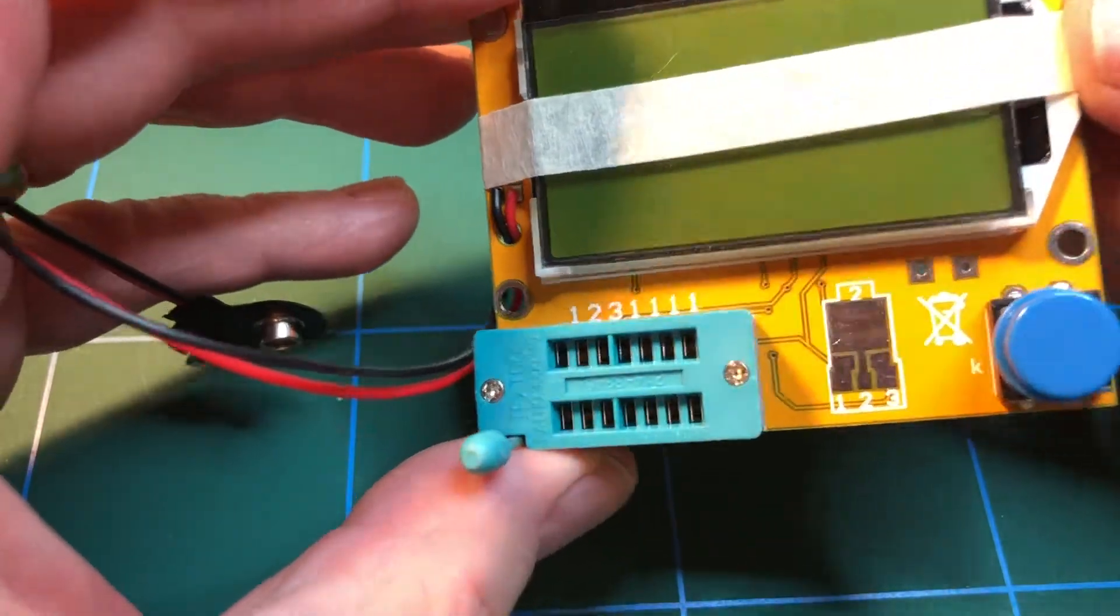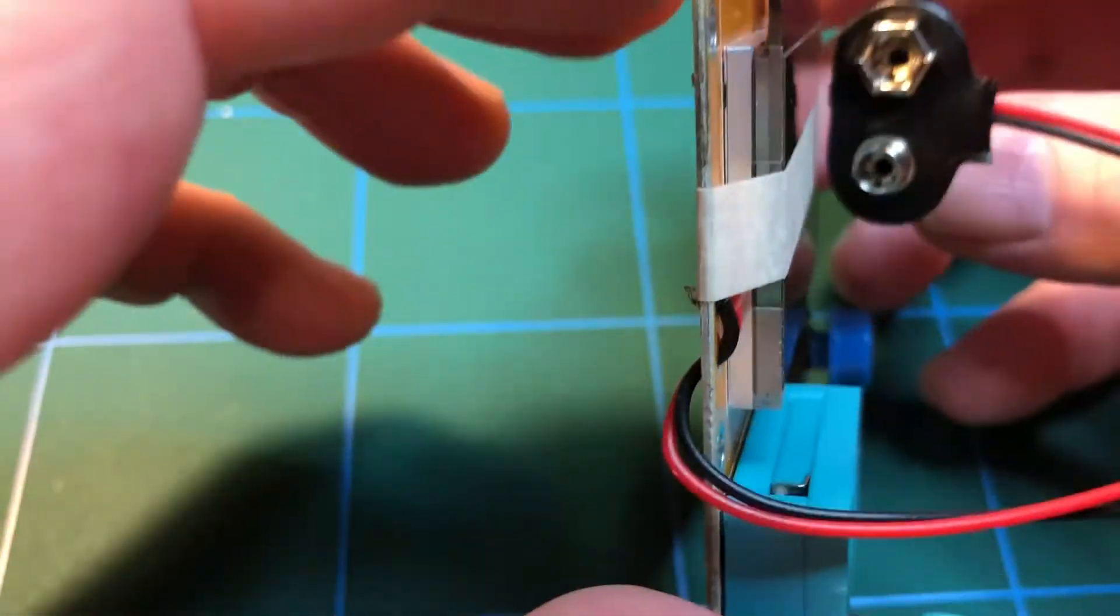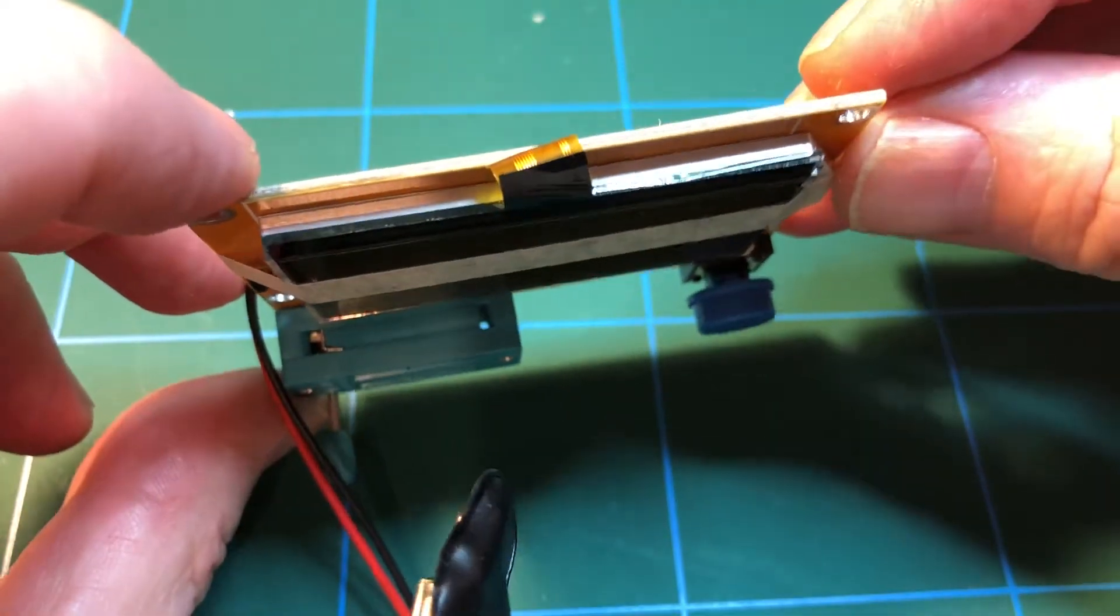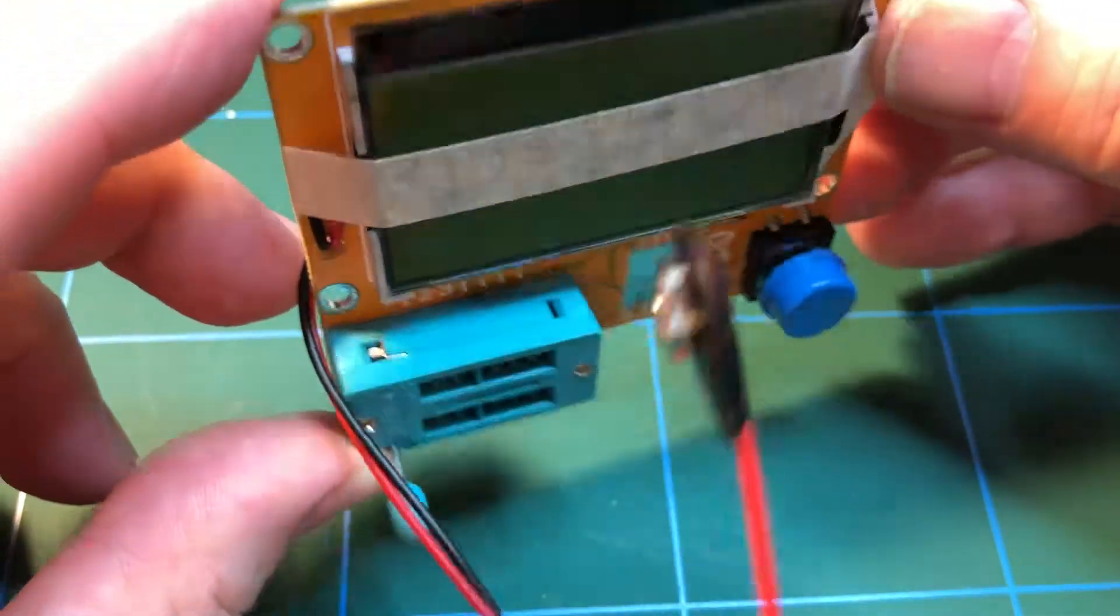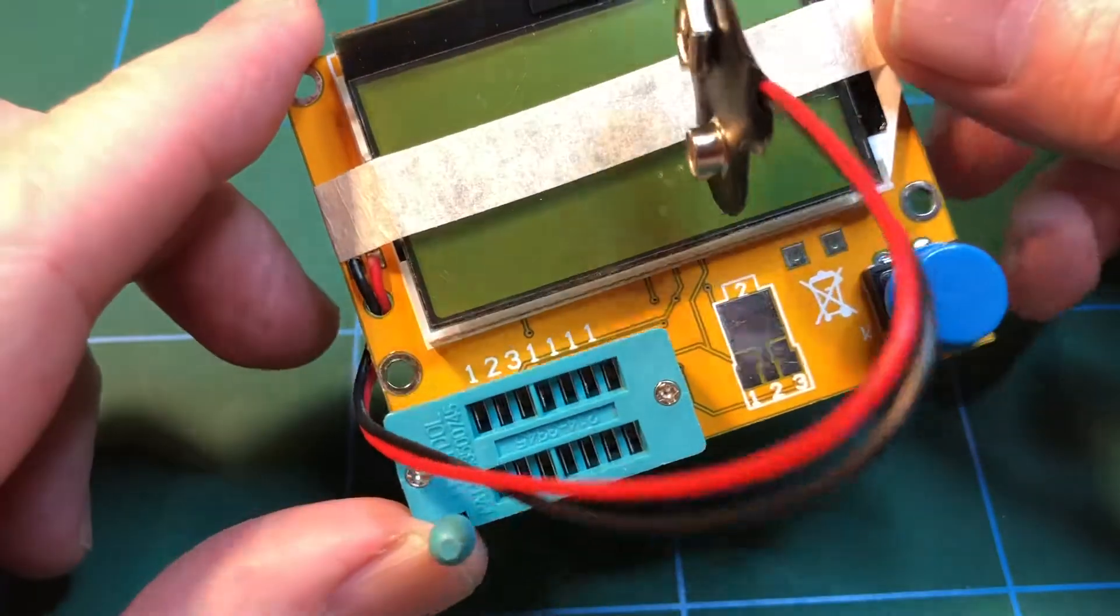So there you go, it's got an LCD screen. I'm not sure if it's backlit. I've got a feeling it might be actually, because if you look at it, that's the LCD there, but it's got a load of gubbins behind it. So I don't know whether it's got the driver chip built into there or not.